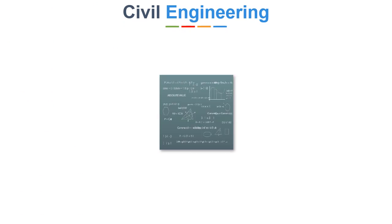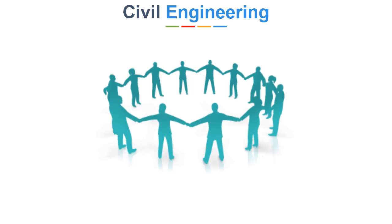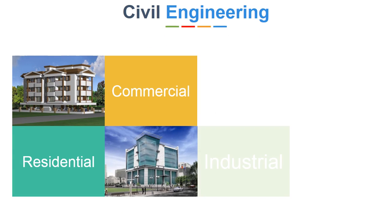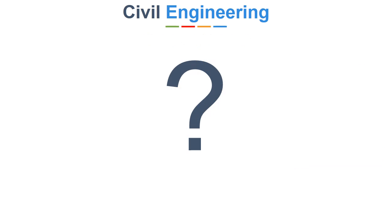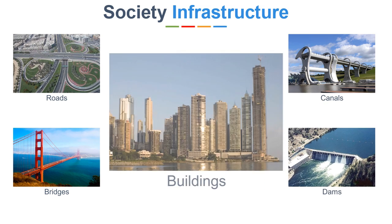Civil engineering makes use of scientific principles to solve the given problems of society, like residential, commercial, industrial, and public works projects of all sizes and levels of construction. They build our society's infrastructure like roads, bridges, canals, dams, and buildings.